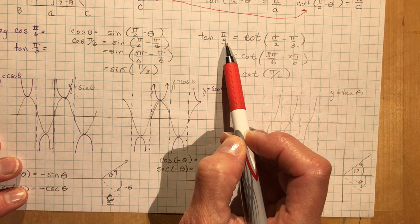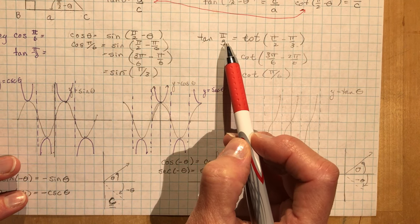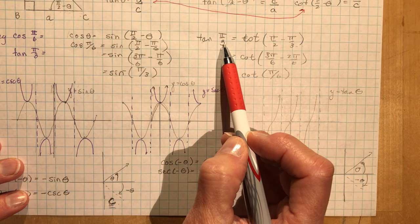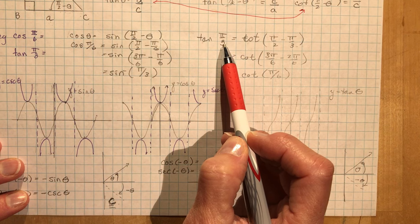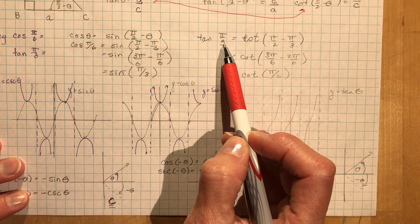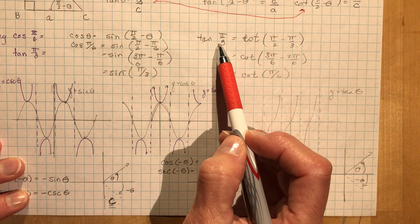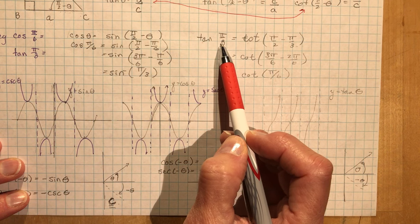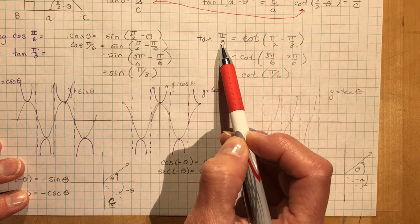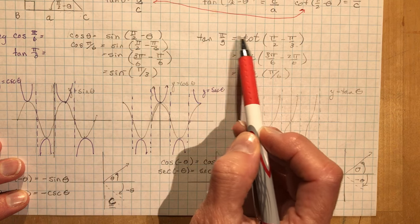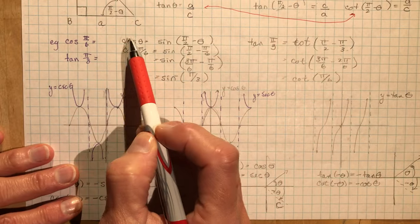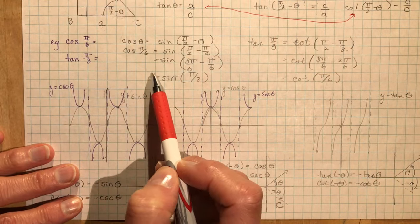Now remember that when you're doing co-function identities you will have to be asked for a co-function identity. The teacher will say, prove the following or find an equivalent co-function identity for the tan of pi over 3. So you know that tan goes to cotan and you know cos goes to sine and sine goes to cos.